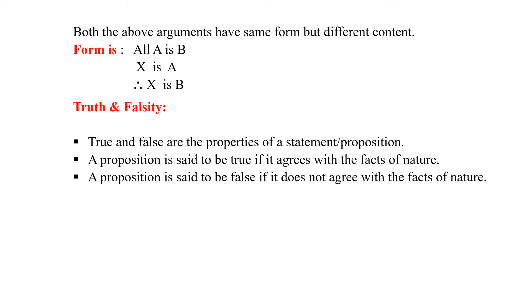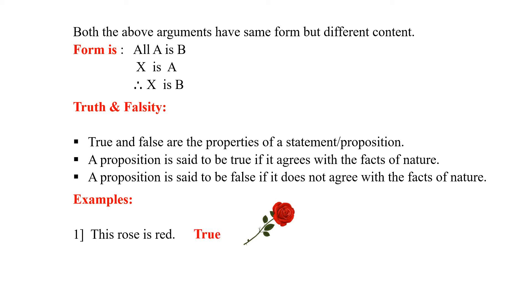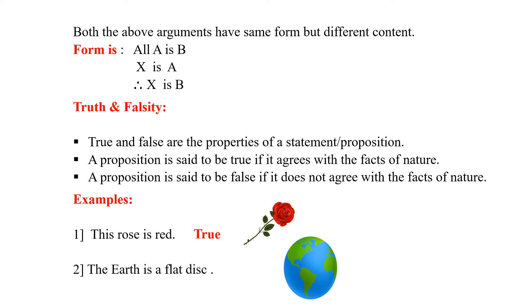Let us see a few examples. You can see a red rose. The statement I make is: this rose is red. Does it agree with the facts of nature? Yes — I can see that the rose is red, so this proposition is a true proposition. Another example: the earth is a flat disc. Can you see the earth? Yes — it is not a flat disc. Therefore, this proposition is a false proposition.